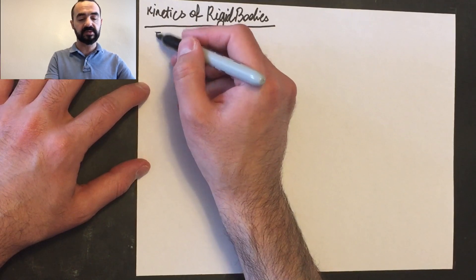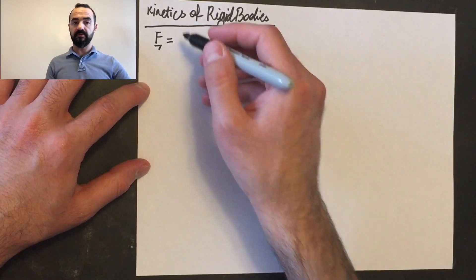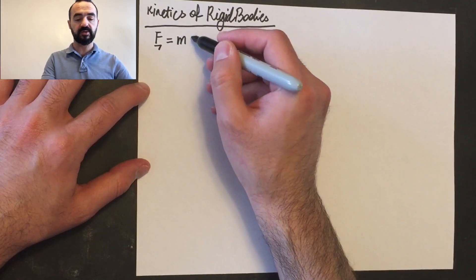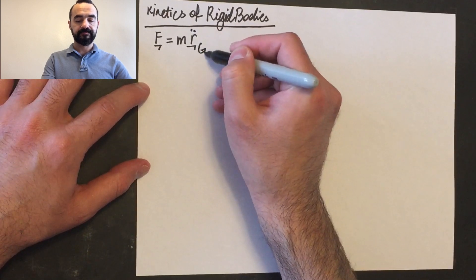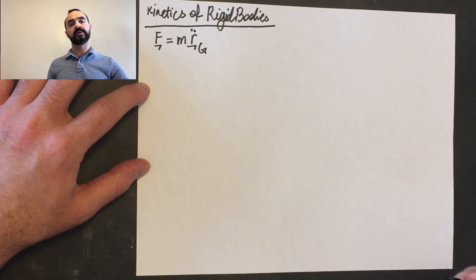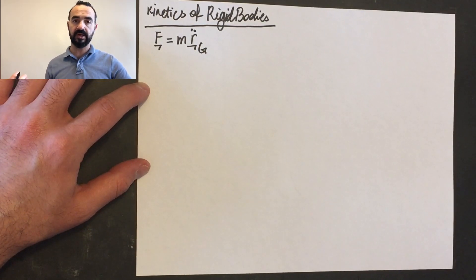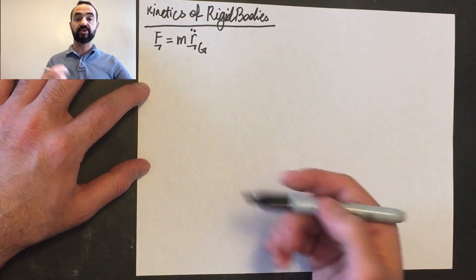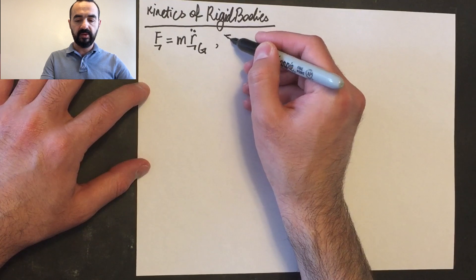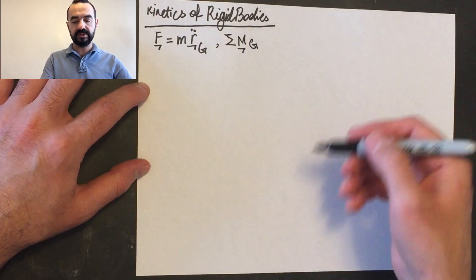For a system of particles, we said that F — the sum of net external forces — was equal to M·R̈_G. R̈_G is the acceleration of the center of mass, and this is the translational equation of motion. Then we had the rotational equation of motion for a system of particles.